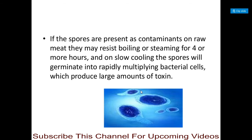If spores are present as contaminants on raw meat, they may resist boiling or survive steaming for 4 or more hours. On slow cooling, the spores will germinate into rapidly multiplying bacterial cells, which later produce large amounts of toxin. If there is slow cooling, spores germinate to vegetative cells, and these vegetative cells then produce large quantities of toxins in the food.